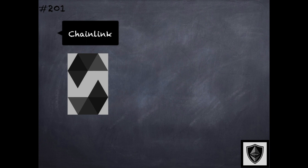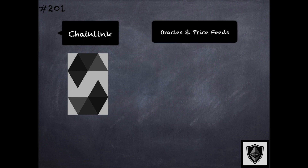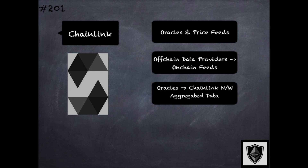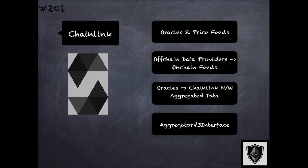Chainlink is perhaps the most widely used oracle and source of price feeds for smart contracts on Ethereum. Price data and other kinds of data are taken from multiple off-chain data providers and put on-chain to create these feeds by the decentralized oracles on the Chainlink network. Chainlink has mechanisms for aggregating data across various data providers and provides an extensive set of APIs for working with these oracles and price feeds. This is something very often encountered within different smart contract applications on Ethereum.